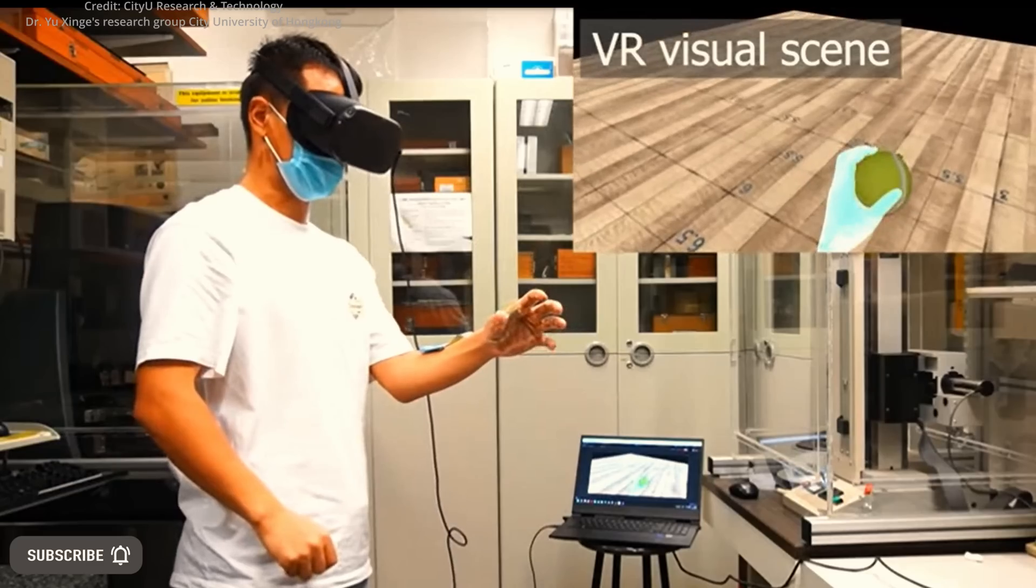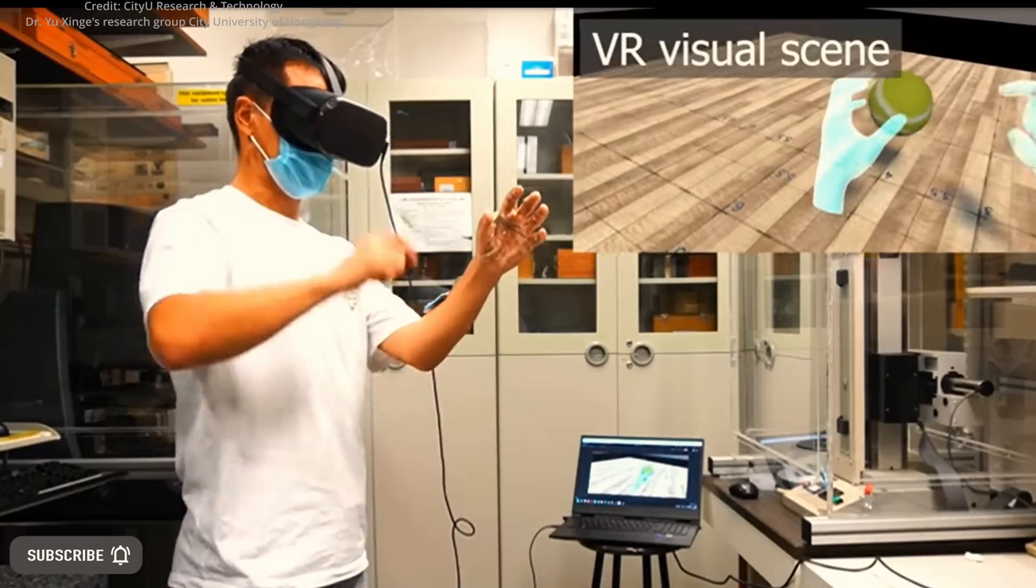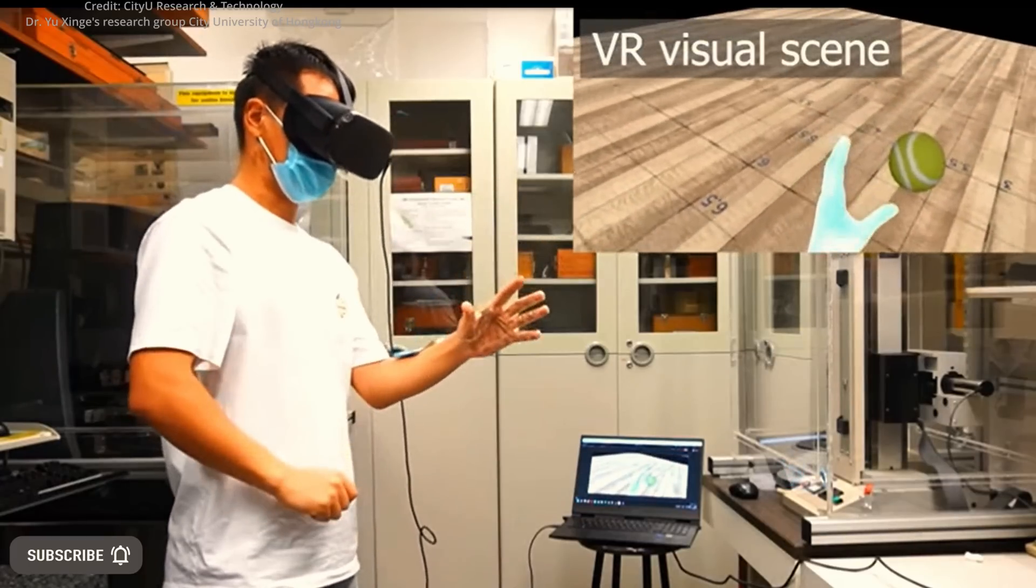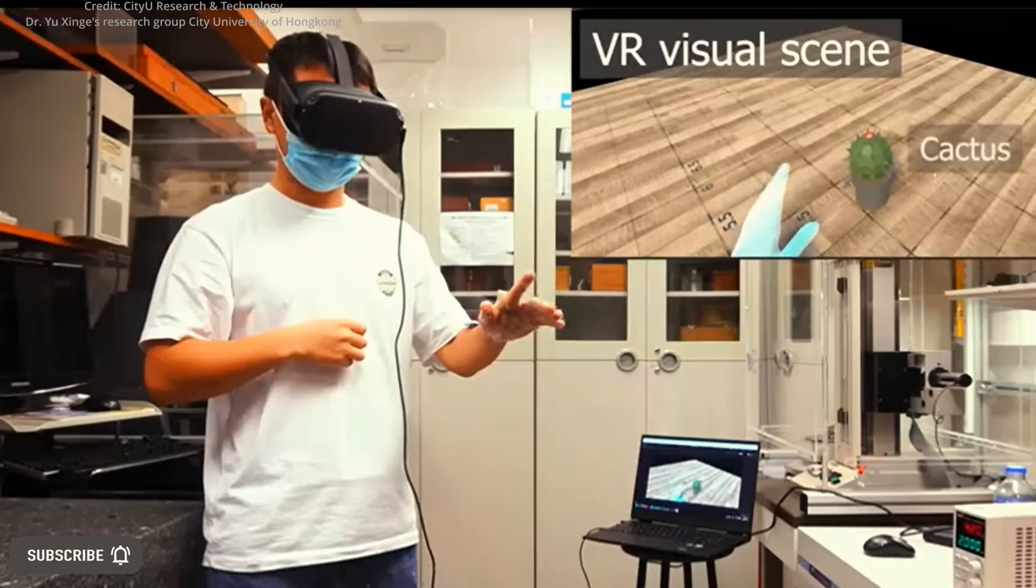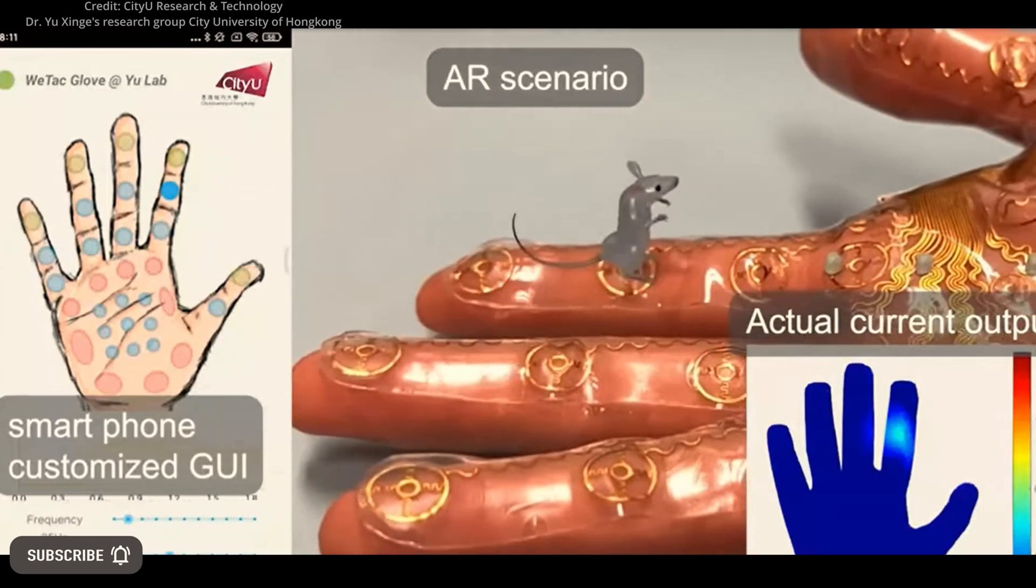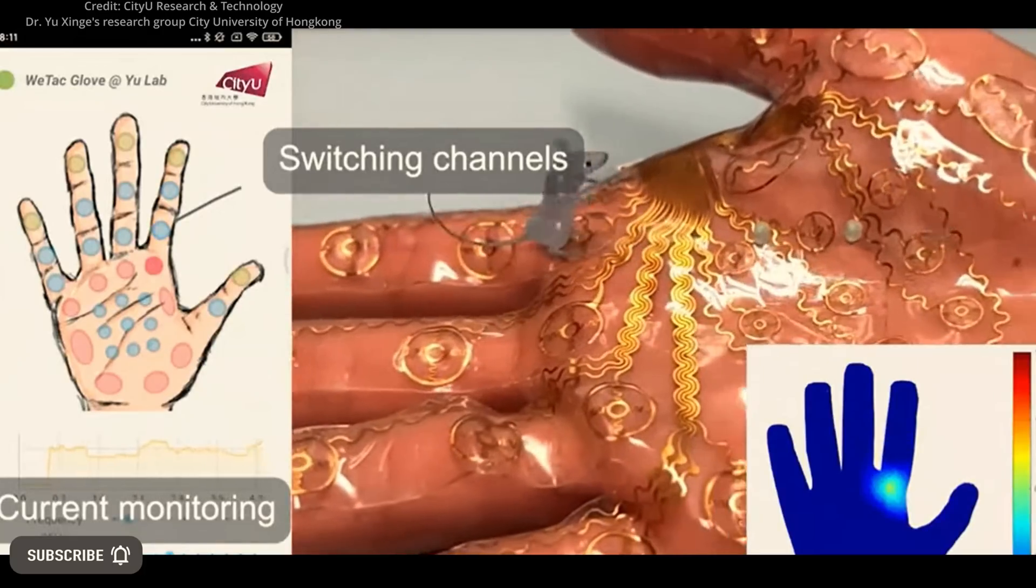Users of WITAC can feel virtual objects as if they are real in a variety of scenarios, including practicing sports with a virtual tennis ball, feeling a virtual cactus, or experiencing a mouse running across their hand in social events or virtual games.